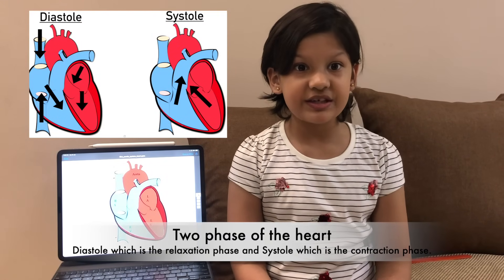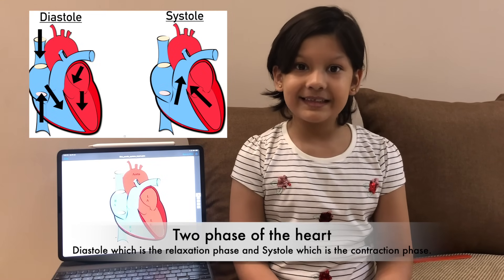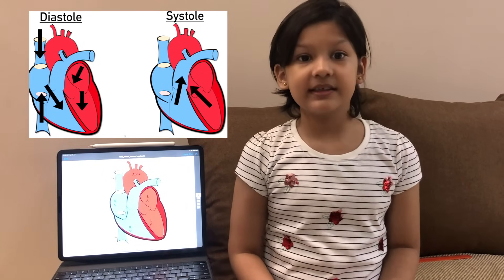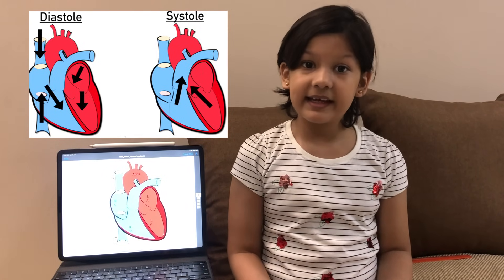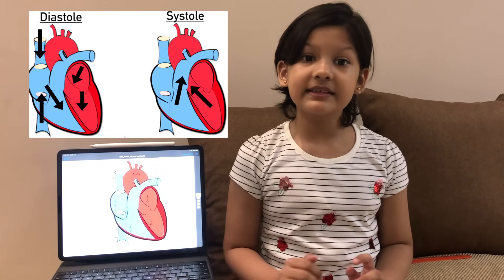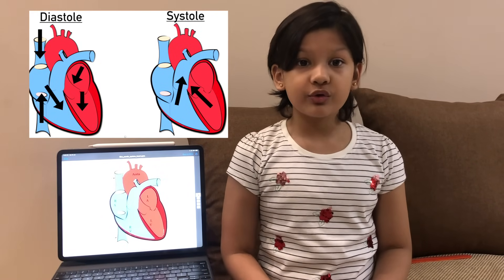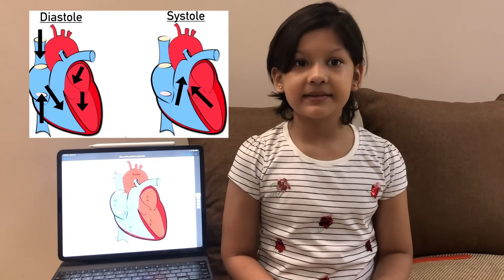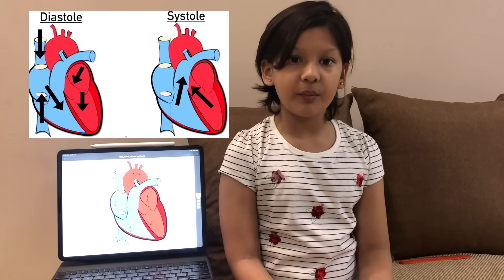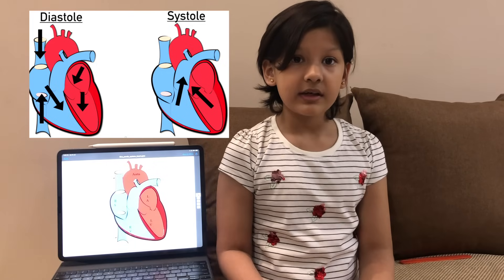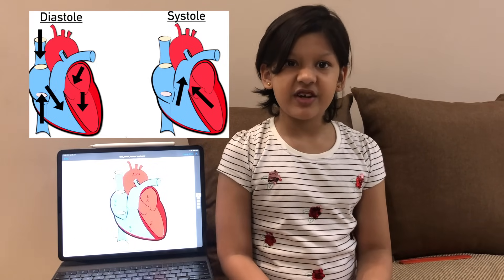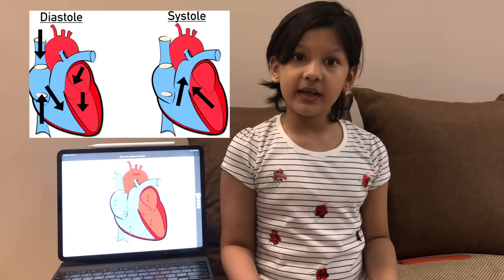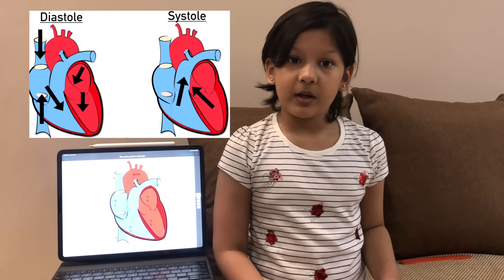Our heart has two phases of the heartbeat: diastole, which is the relaxation phase, and systole, which is the contraction phase. Diastole occurs when the ventricles are relaxing and blood is getting filled in the atrium through the superior and inferior vena cava and the pulmonary veins. The tricuspid and bicuspid valves open during diastole and blood flows from the atria to the ventricles.